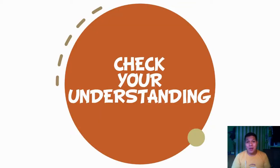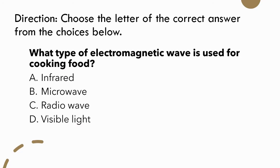Let us now check your understanding with a multiple choice test. Choose the letter of the correct answer. Question 1: What type of electromagnetic wave is used for cooking food? A, infrared. B, microwave. C, radio wave. D, visible light. The correct answer is letter B, microwave. Question 2: How do radio waves propagate? A, through solid media. B, at the speed of light in vacuum. C, like other electromagnetic waves. D, from transmitter to receiver. The correct answer is letter D — radio waves can propagate from the transmitter to the receiver.